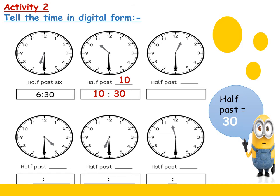In the next one, what is the time? Half past 12 — we agreed that we choose the smallest number if the short hand is between two numbers. Half past 12 means 12 and 30 minutes, because half past equals 30 minutes.